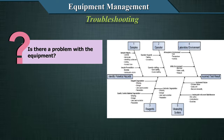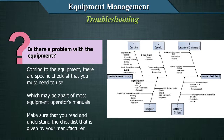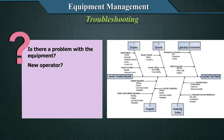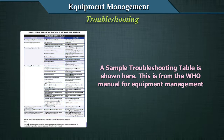Is there a problem with the equipment? Coming to the equipment, there are specific checklists that you may need to use, which will be part of most equipment operators' manuals. Make sure that you read and understand the checklist that is given by your manufacturer. One more thing to look at is whether it is a new operator — somebody not trained. A sample troubleshooting table is shown here, from the WHO manual for equipment management.